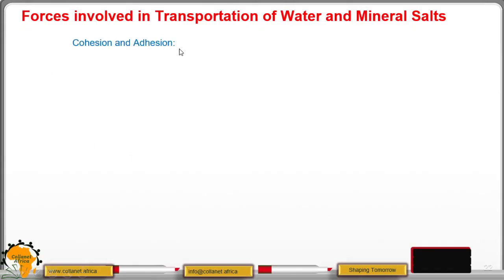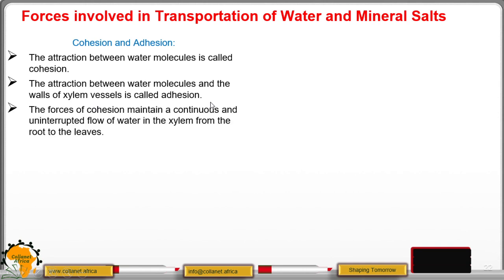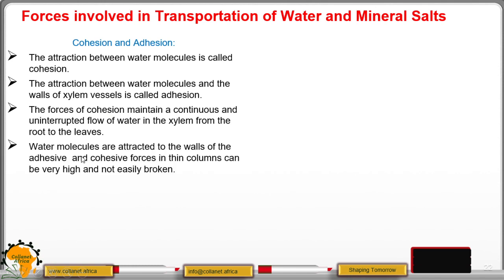Cohesion and adhesion forces: the attraction between water molecules is called cohesion, and the attraction between water molecules and the walls of the xylem is called adhesion. The forces of cohesion maintain a continuous and uninterrupted flow of water in the xylem from roots to leaves. Water molecules are attracted to the vessel walls, and cohesive forces in thin columns can be very high and not easily broken, especially since xylem vessels are very narrow.